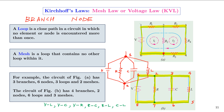In summary, figure A has 3 branches, 6 nodes, 3 loops, and 2 meshes, whereas figure B has 4 branches, 2 nodes, 6 loops, and 3 meshes. With that understanding, we shall try to understand Kirchhoff's mesh law or voltage law.